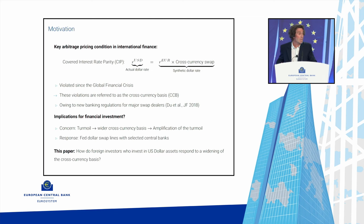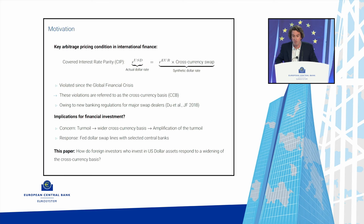We know this relationship has been violated since the great financial crisis — it no longer holds. These deviations are referred to as the cross-currency basis. A main explanation in the literature is that new banking regulations introduced after the crisis for major swap dealers made it harder for those dealers to supply swaps, hence the widening of the cross-currency basis.